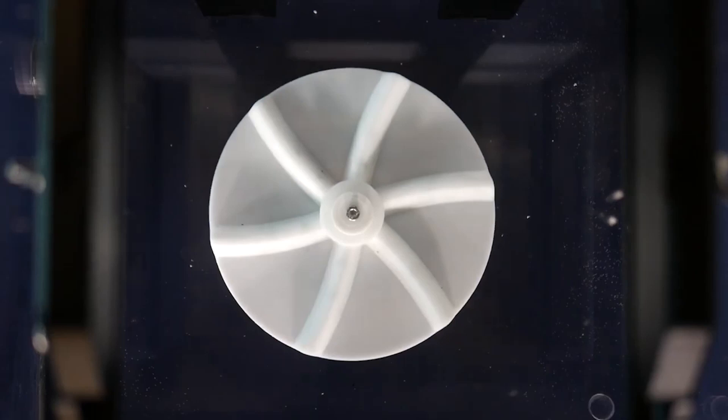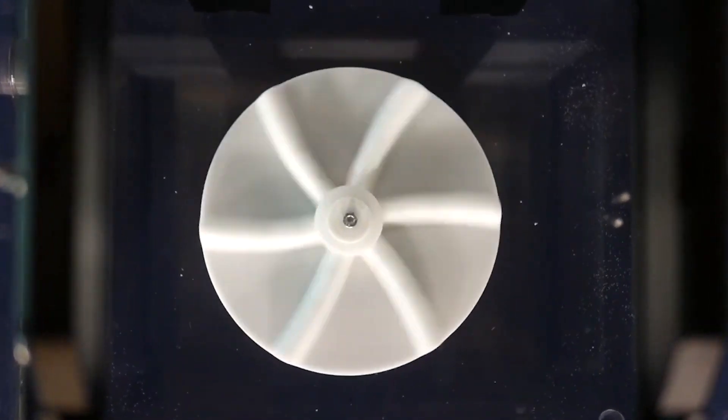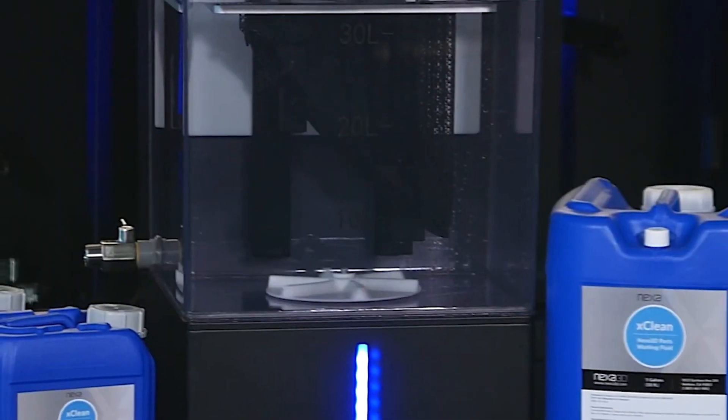To facilitate maximum throughput, the X-Wash can accept two NXE 400 build plates simultaneously and comes standard with a basket option for smaller loose parts.